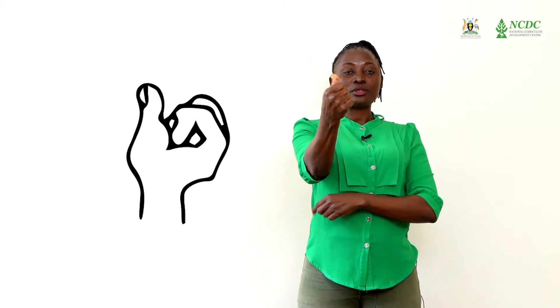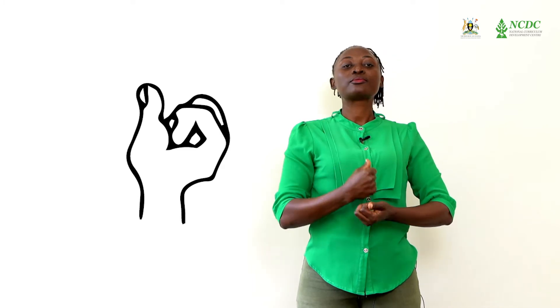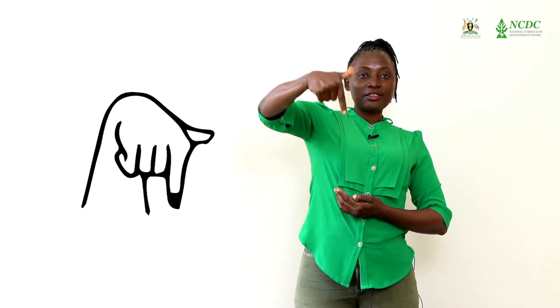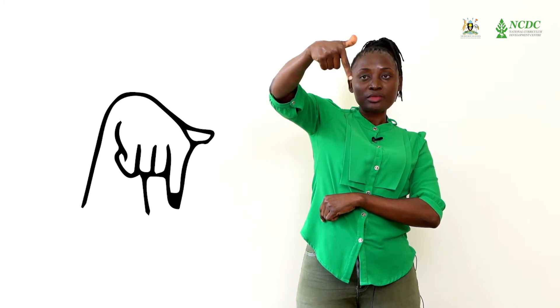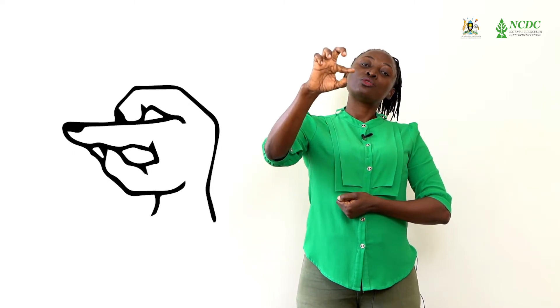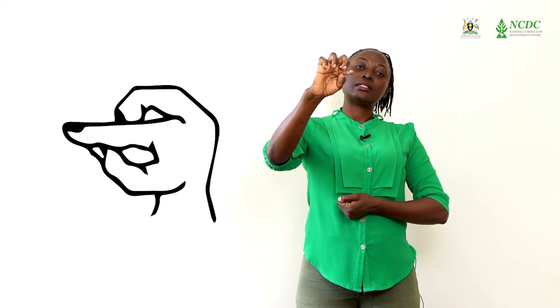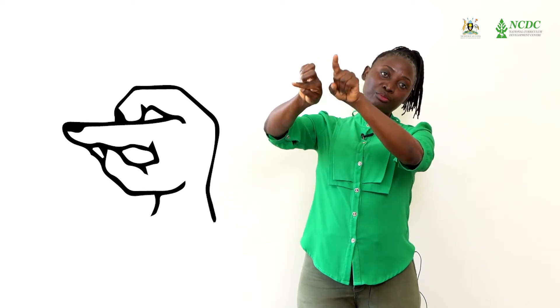Then when we get to 6, it changes — like the shape. You look at the shape. Then we have 7, as it is written. Then we have 8. Look closely at the hand shape — you bring the fingers closed. This is 8.